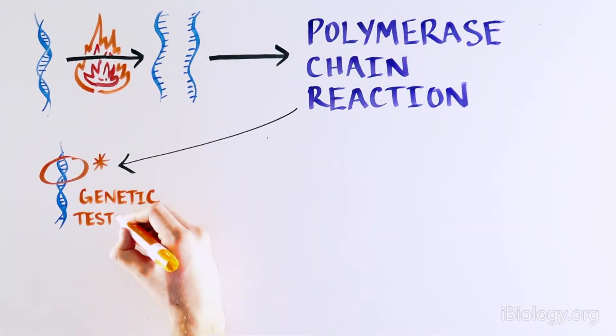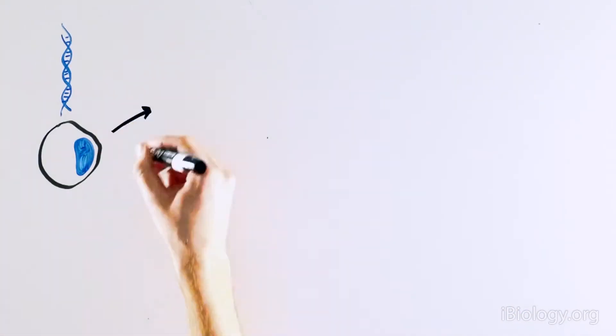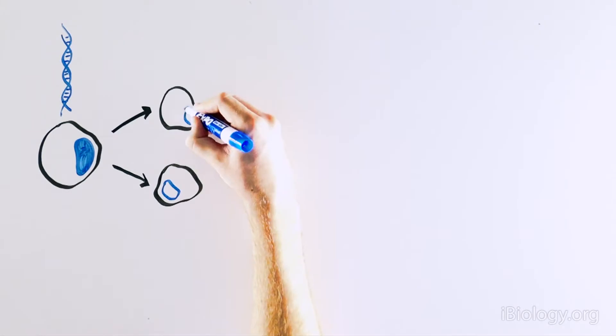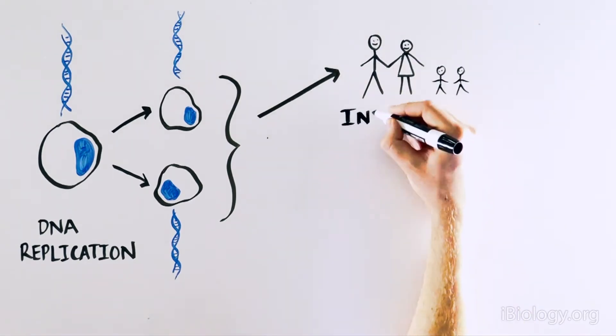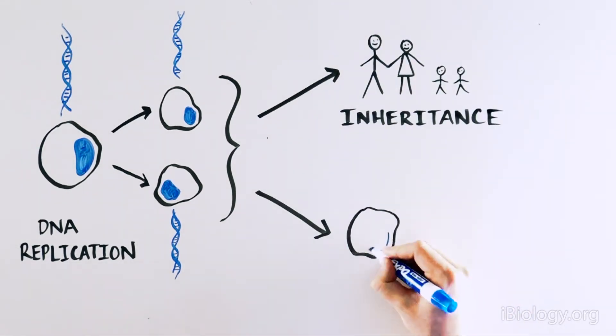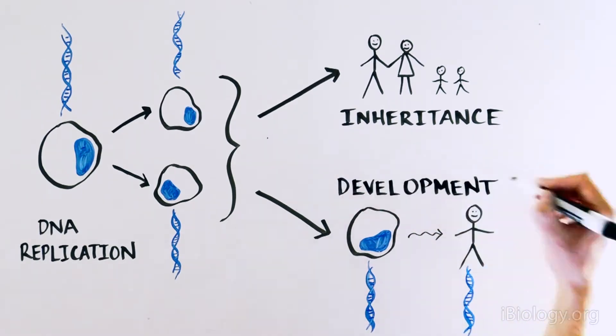This simple concept is the basis for an important technique we frequently use in the laboratory called polymerase chain reaction, which is used in genetic testing, forensics, and paternity tests. Meselson and Stahl identified the fundamental process by which our DNA gets passed on from cell to cell. This is the basis for inheritance and an essential part of our development from a single cell to a complete organism that maintains the same DNA sequence in all of its cells.